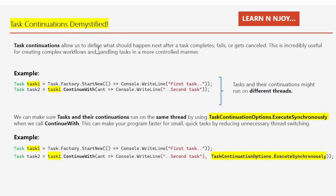First of all, let's understand what task continuations are. Imagine you are doing a series of tasks one after the other. Sometimes you want to start a new task immediately after finishing the current one, or only if the current one succeeds or fails. This is where continuations come in handy. In programming, especially with tasks, continuations allow you to define what should happen next after a task completes, fails, or even gets cancelled.